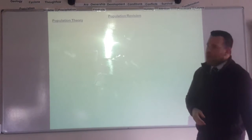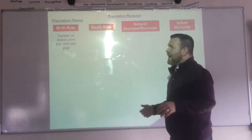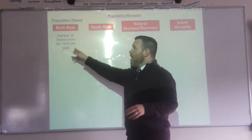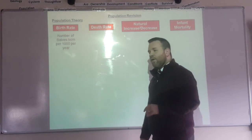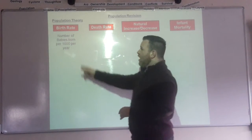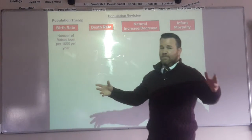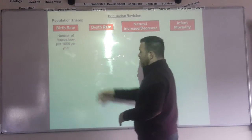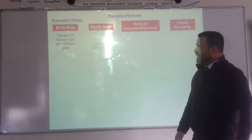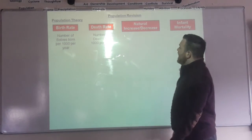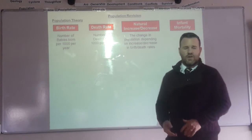First of all, know your key terms. For two marks you might get asked what is meant by the term birth rate — the number of babies born per 1,000 per year. You've got to include the number, the 1,000 bit, and the timescale per year. Birth rate: number of babies born per 1,000 per year. Death rate: number of deaths per 1,000 per year. Natural increase or decrease is then the difference between the two.